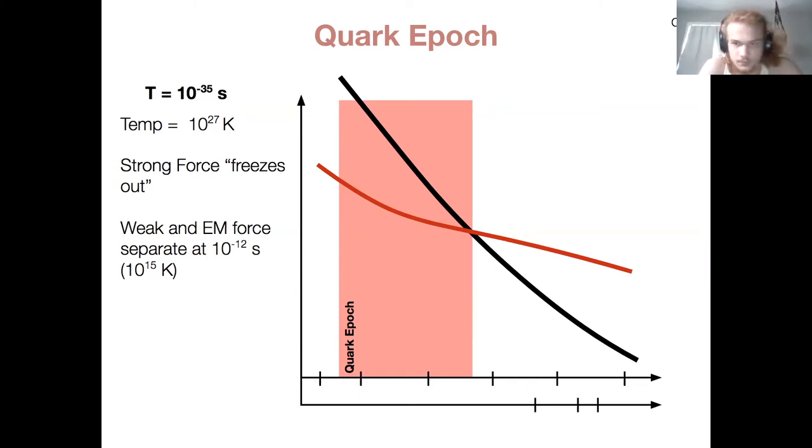Moving on to our quark epic. So now the time has barely changed. It's now 10 to the minus 35 seconds, temperature 10 to the 27 Kelvin. This is when the strong force freezes out. So gravity already dropped out. Now the strong force is dropping out. And also later within the core epic, the weak force and the electromagnetic force, which are previously unified, finally separate. So sometime later, I mean, quite a while later on our timescale here and at a much lower temperature. So the four fundamental forces start to part ways in the gut epic with gravity. And then the quark epic, all the other forces separate from each other in turn.